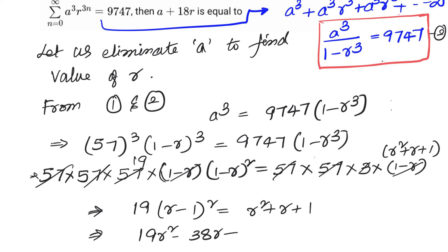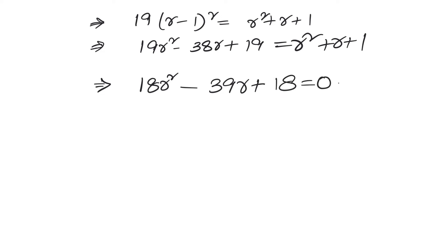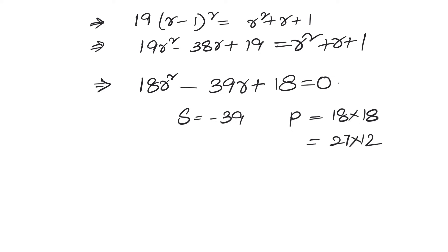Remember that an infinite GP requires |R| less than 1. So whatever values we get, if we get two values, we take only the value which is less than 1. The quadratic equation we got is 18R² minus 13R plus 18 equals 0. The sum of roots is minus 39 and product is 324. We can split as minus 27 and minus 12.